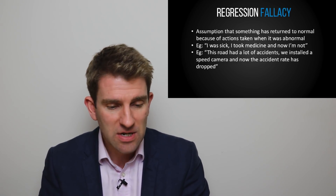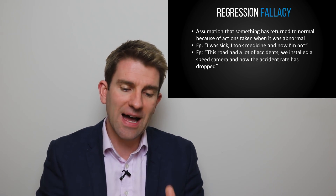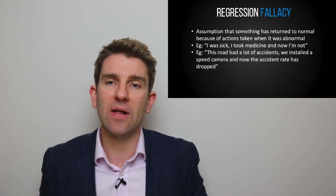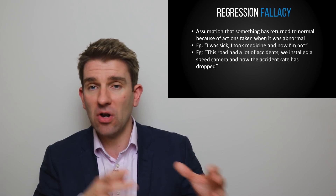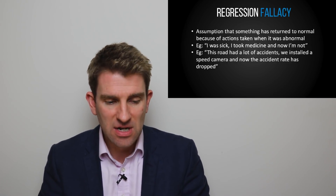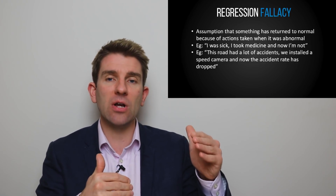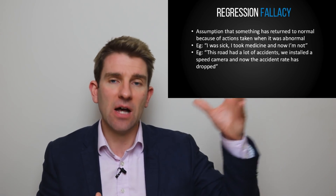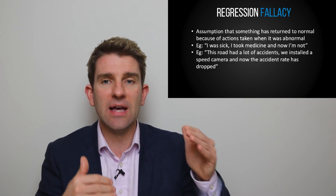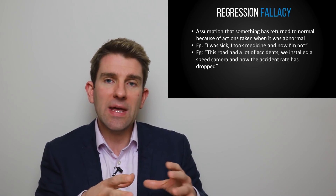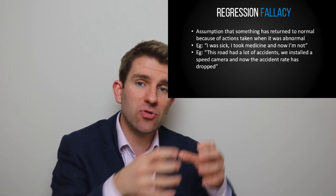Alright, so that's representative bias. Let's look at regression fallacy — I like this one. This is the assumption that something has returned to normal because of actions taken on it when it was abnormal. The idea is that when something moves out of its mean and something happens to it, it comes back to the mean. We then assume it was that action taken when it was abnormal that caused it to return to the mean.